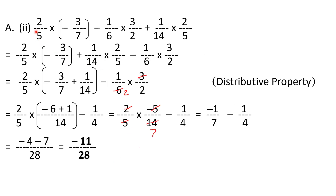Part two is: two by five into minus three by seven, minus one by six into three by two, plus one by fourteen into two by five. We notice two by five appears here and also here at the end. So I regroup: two by five into minus three by seven, plus one by fourteen into two by five — bringing the two-by-five terms together — and minus one by six into three by two is placed separately.